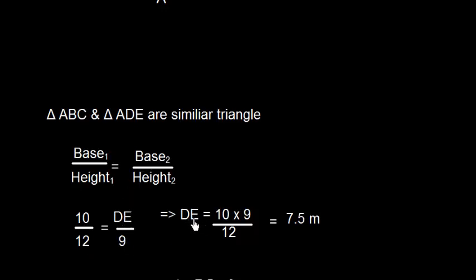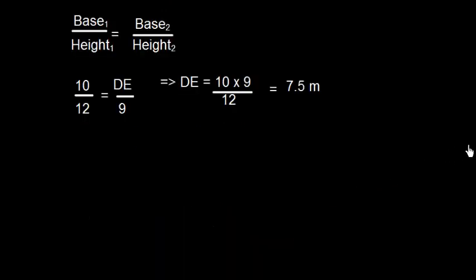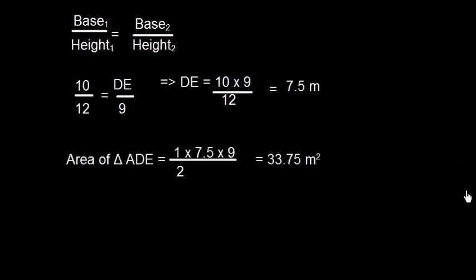This gives me DE is equal to 10 multiplied by 9 divided by 12 or 7.5 meter. So, let's find out the area of triangle ADE. ADE is base into height. Base we just now have calculated which is 7.5 meter. And height is 9 meter.